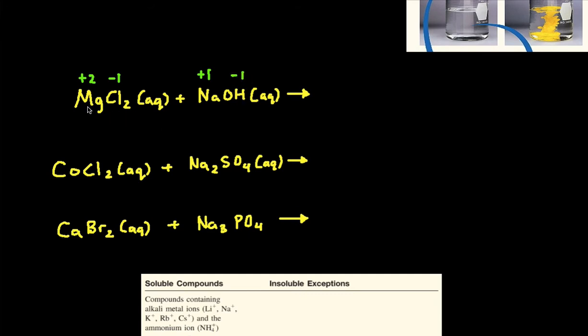Then, you can just take your two positive charges and switch places. So you're going to get NaCl plus MgOH. So notice I took the Mg and I took the Na. I essentially switched places.